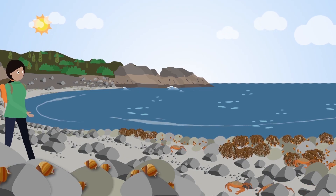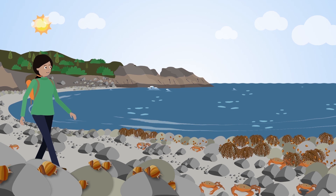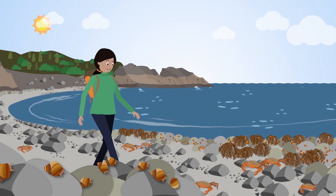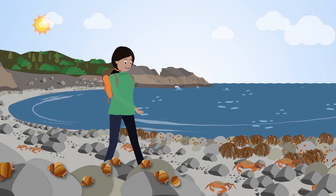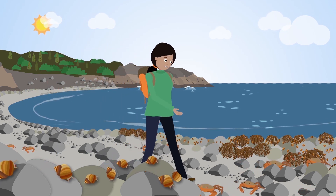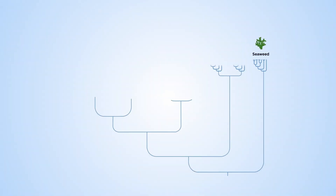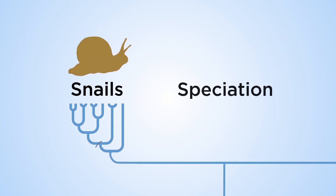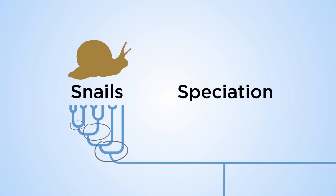Have you ever wondered where the enormous diversity of animals and plants come from? Or how one species diverges to form two new species? The answer is speciation. Speciation is the splitting process that generates biological diversity.